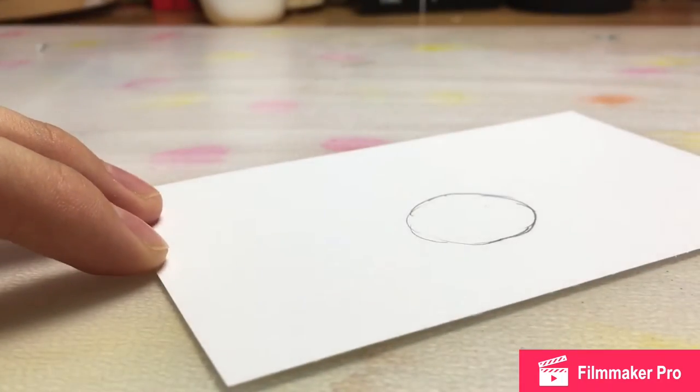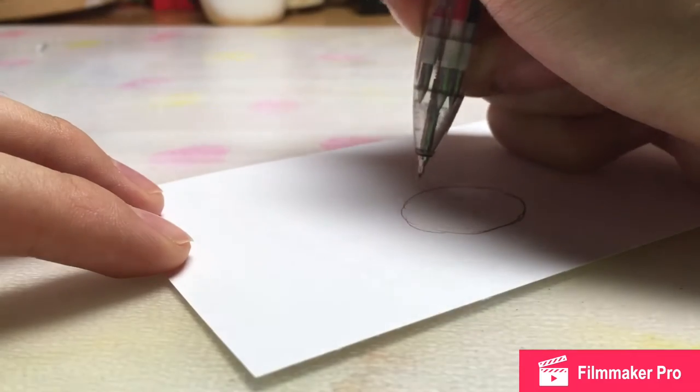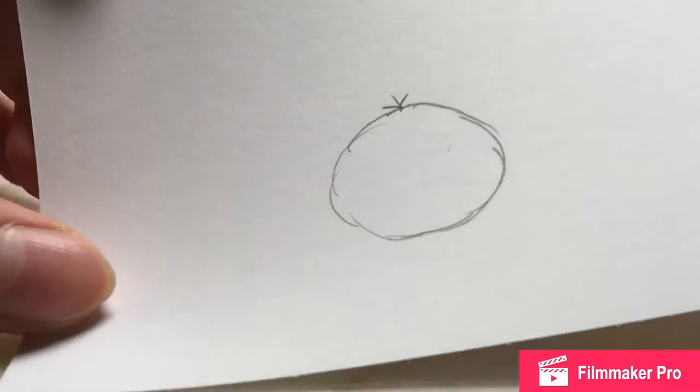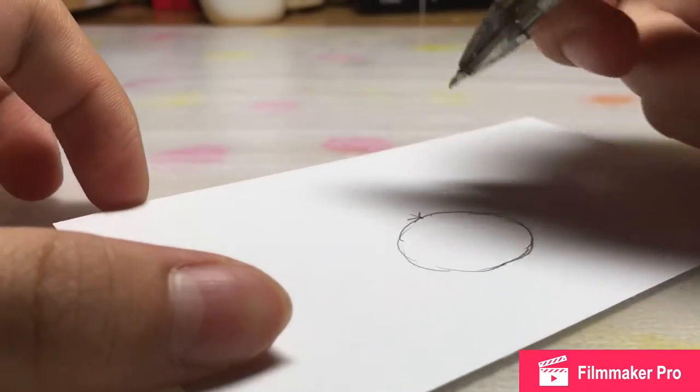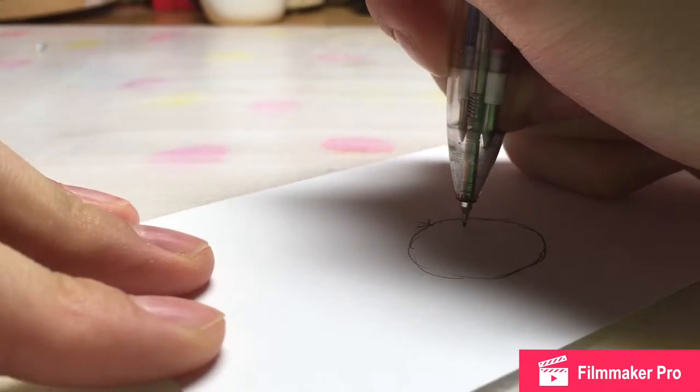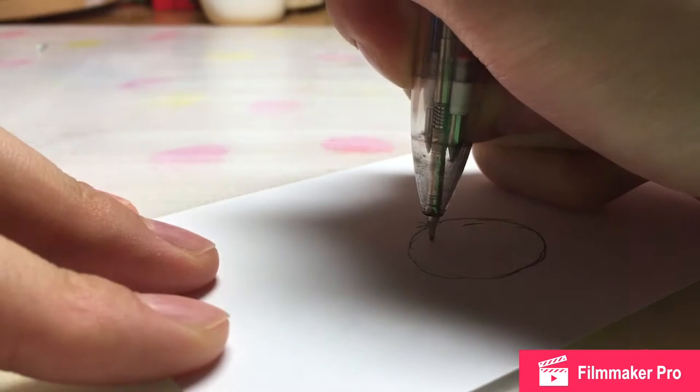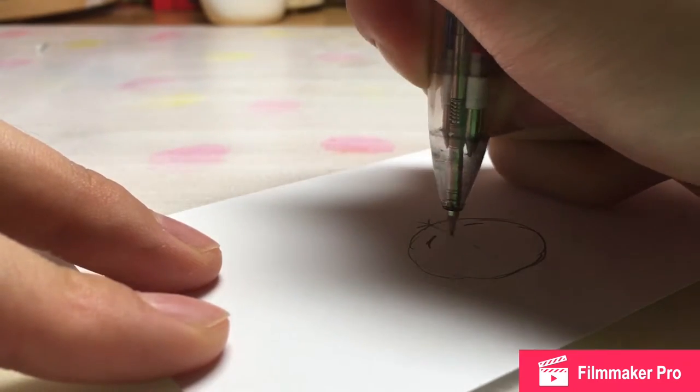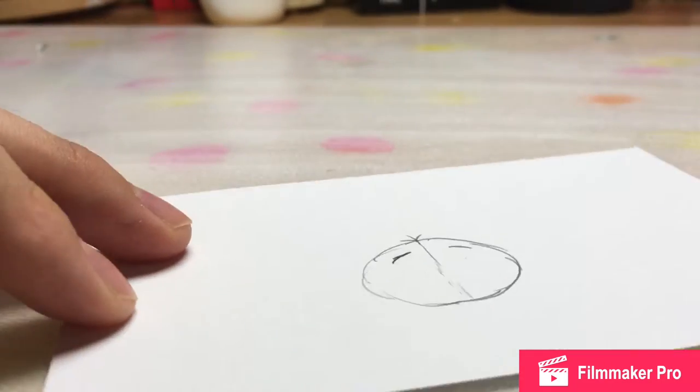Next you have to draw his hair, three hairs over here. Little hairs, and next the eyebrows. The eyebrows can be like, the hair is here and the eyebrows will be on the side.